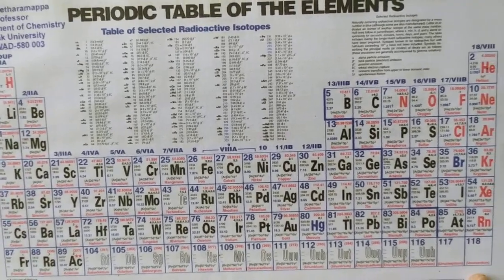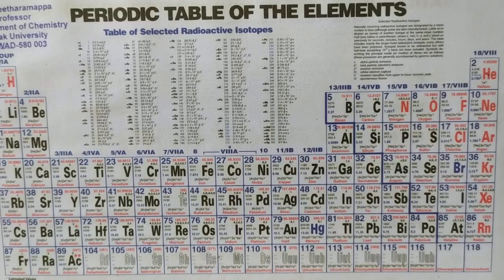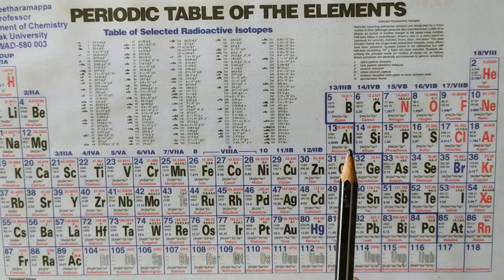In the modern periodic table, elements are arranged in the form of vertical rows called groups and horizontal rows called periods. In the next class, we will see how to remember elements up to atomic number 30 and how their properties vary along the period and along the group.